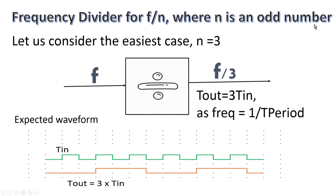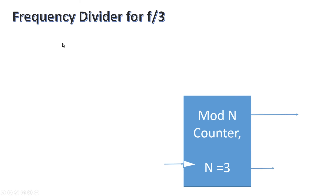Let us start with the first part, the logic circuit of a frequency divider to generate an output signal of frequency f/n where n is an odd number. Let us consider the easiest case: n equals 3. So we have to design a frequency divider whose input will be a signal of frequency f and whose output will be a signal of frequency f/3. The time period of the output signal will be three times the time period of the input signal, since frequency is inversely proportional to time period.